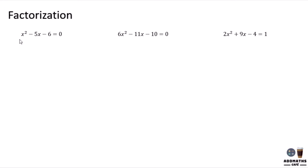To do factorization, we look at the quadratic term — the power of 2 — and the linear x, which is x to the power of 1. When we solve by factorization, we open the bracket first. To get x squared in the bracket, we use x times x.